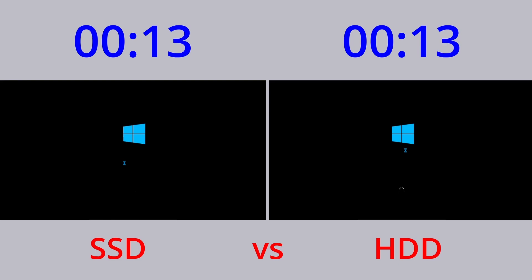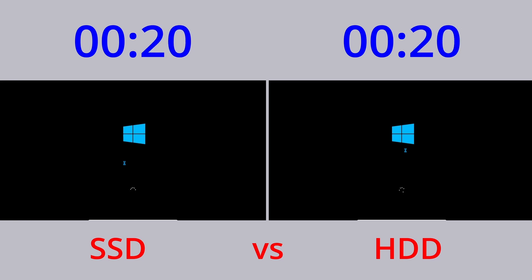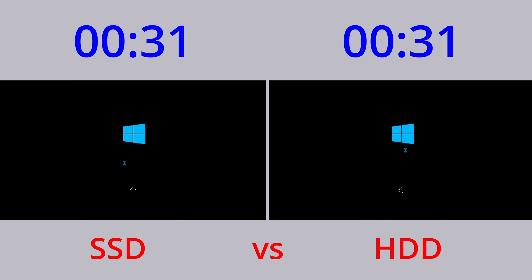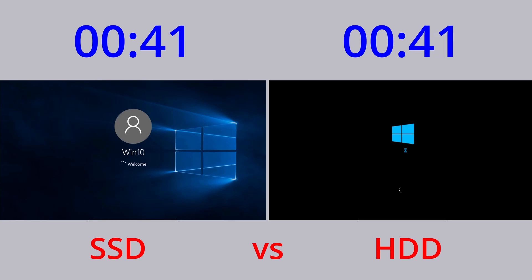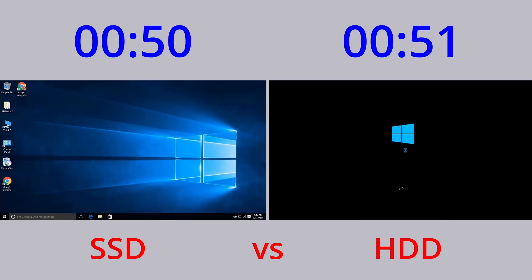The specifications of these two storage devices are the same — 8GB of RAM (random access memory) and 1TB of storage. As you can see, it is clearly evident that using an SSD storage device is much faster in starting up the operating system; at 50 seconds, the SSD had already loaded the desktop.